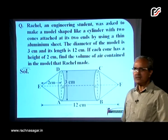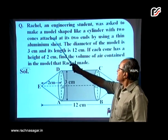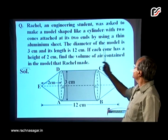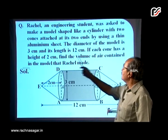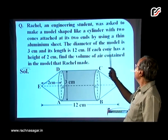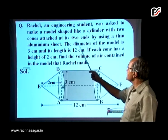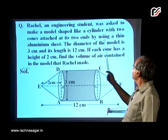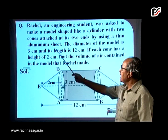We take another question. Rachel, an engineering student, was asked to make a model shaped like a cylinder with two cones attached at its two ends by using a thin aluminium sheet.